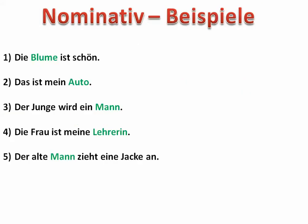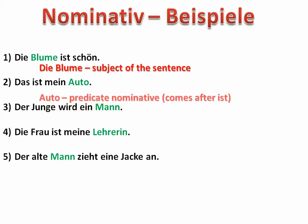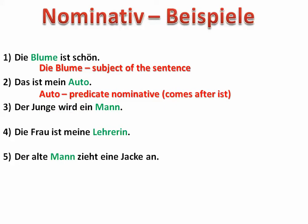So let's look at some examples of the Nominative Case. 'Die Blume ist schön.' In this sentence, the Blume — or flower — is the subject of the sentence, so therefore it's Nominative. 'Das ist mein Auto.' In this sentence, Auto comes after a conjugation of the verb sein — in this case ist — making it the predicate Nominative.